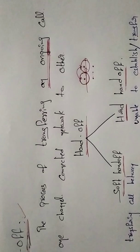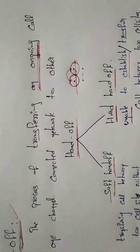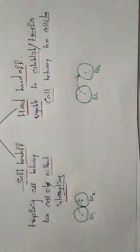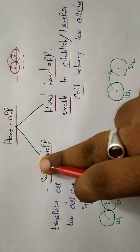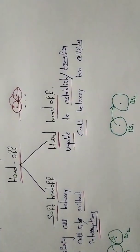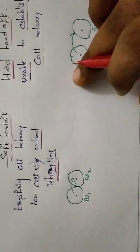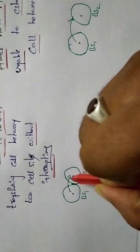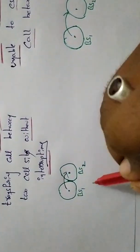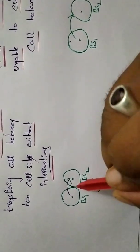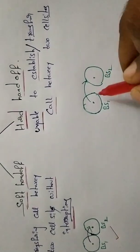This is the process of transferring an ongoing call from one target network to another. For example, two towers — base station one and base station two. The establishment is based on the tower location. The main reason is that the tower location determines the type of hand-off. The hard hand-off is based on the tower location.